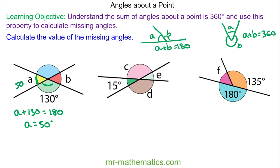If we know angle a is 50 degrees, we can work out this blue angle because it lies along the same straight line as a, so that will be 180 take away 50, and that will be 130 degrees.